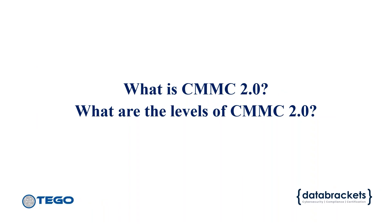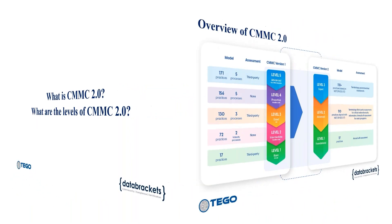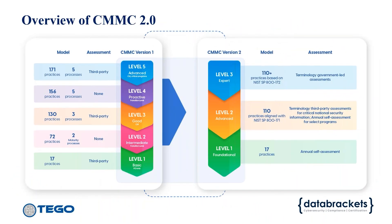What is CMMC 2.0 and what are the levels? We have this handy chart which compares and contrasts version one to version two. This was interesting because everybody thought that eliminating two levels would somehow make this easier — it really didn't change a thing. The optional plus-20 processes have been taken out, but it is still at its core an assessment against NIST Special Publication 800-171.